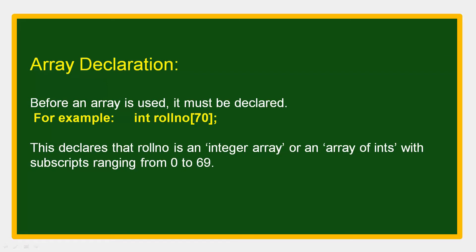Now I'll tell you about array declaration. Before an array is used, you must declare it. For example, if we want to use a roll_number array and store integer values: int roll_number[70]. Here roll_number is the name of the array, 70 is the size, and int is the data type. This declares that roll_number is an array of integers with subscripts (indices) ranging from 0 to 69.